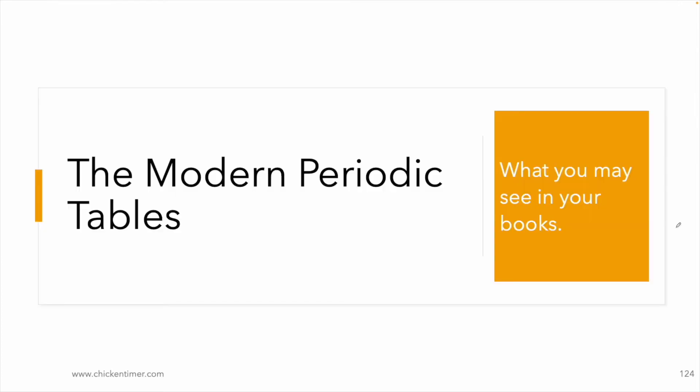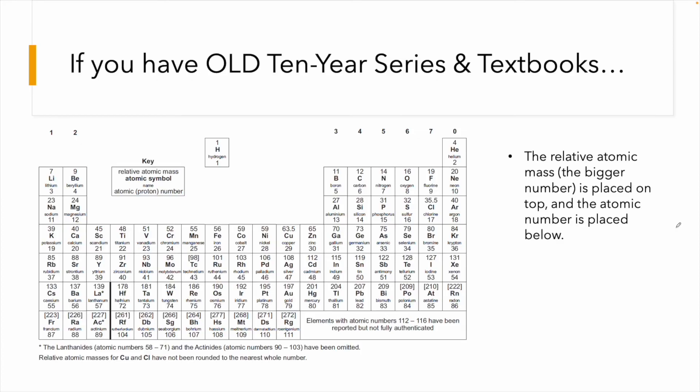This is one of the earlier versions where we have elements organized in eight columns. And so what we have in books right now is the modern periodic table. So you will see what you see in your textbooks and ten years will be one of the few periodic tables that you see in the next few slides. So if you have an old ten years or old textbook, maybe probably 10 to 15 years old, you will see that the periodic table will look relatively different, slightly different.